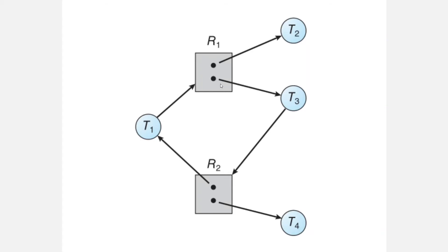Another instance of R2 is allocated to T4. So T1 has R2 and is waiting for R1, but R1 is currently held by T2 and T3. T2 is in a waiting stage, and T3 is also waiting for R2 while T1 is waiting for R1. After some time, when T2 and T4 complete their execution, they release their instances of R1 and R2 respectively. At that point, T1 can take the instance released by T2 and T3 can take the instance released by T4. They can complete their execution without ending up in a deadlock situation.